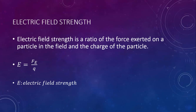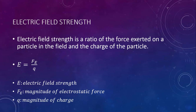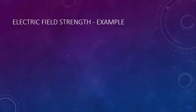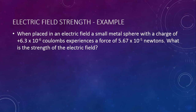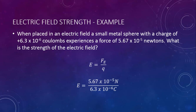Written as an equation, we have E equals Fe over Q, where E stands for electric field strength — often described as electric field intensity — Fe is the electrostatic force, and Q is the charge. For example: a small metal sphere with a charge of positive 6.3 × 10⁻⁶ coulombs experiences a force of 5.67 × 10⁻⁵ newtons. What is the strength of the electric field? We start with the equation, plug in our force and our charge, and we find that the electric field strength is 9 newtons per coulomb — there's no special unit, it's just newtons per coulomb.